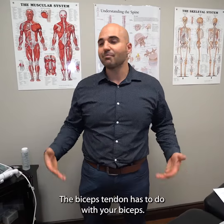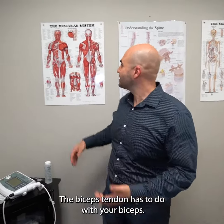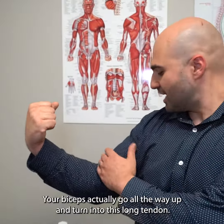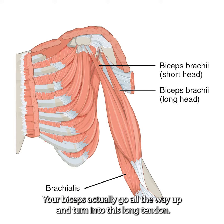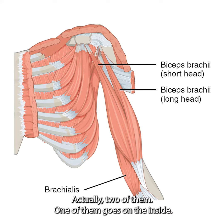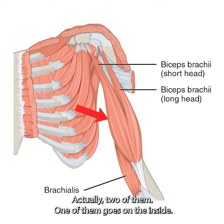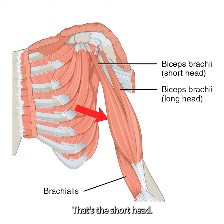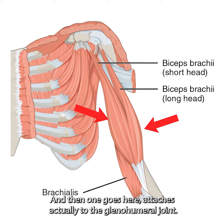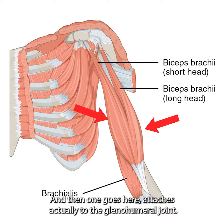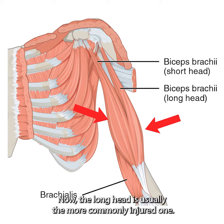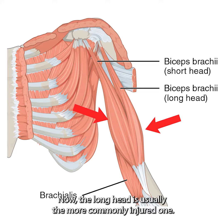Now what is the biceps tendon? The biceps tendon has to do with your biceps. Your biceps actually go all the way up and turn into this long tendon — actually two of them. One of them goes on the inside; that's the short head, and then one goes here and attaches to the glenohumeral joint. We call that the long head. The long head is usually the more commonly injured one.